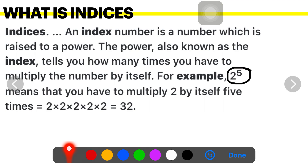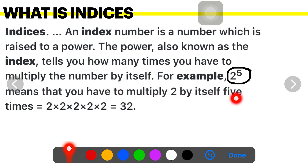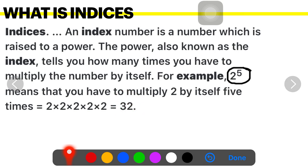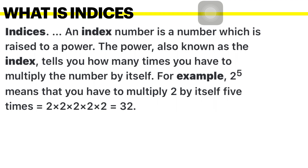So how do we read this? 2 raised to 5, or 2 to the power 5, means you have to multiply 2 by itself 5 times, which is equal to 32. So indices is nothing but an index number which is present in the form of a raised to m.